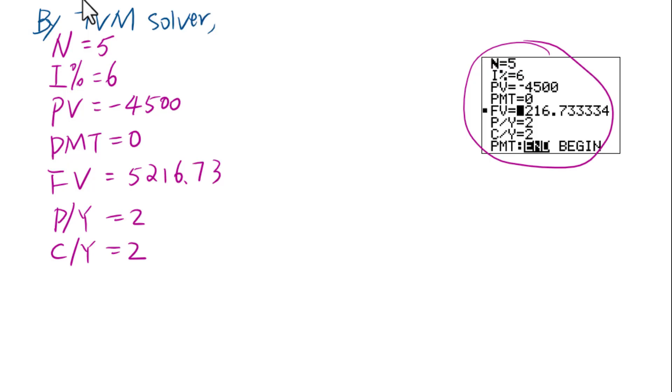By TVM Solver, just write down whatever you have in TVM Solver. So, interest equals 5216.73 minus 4500 equals $716.73.